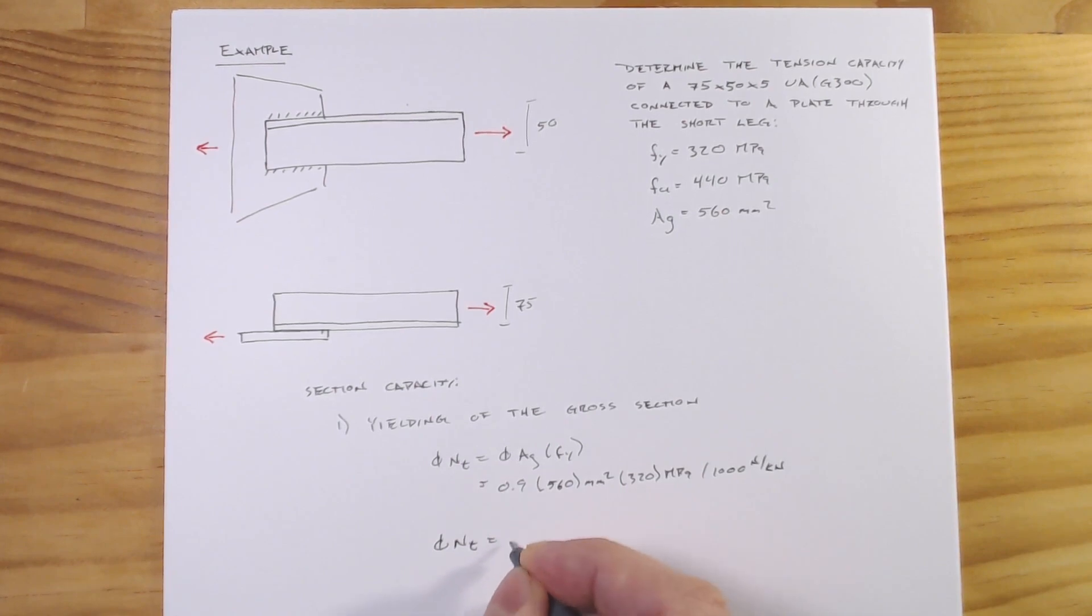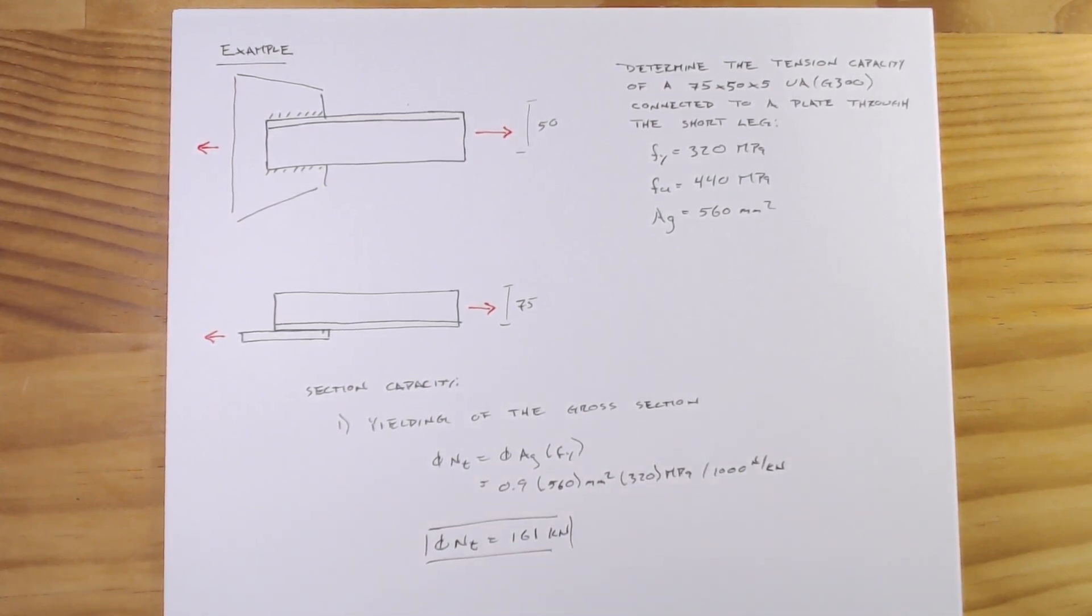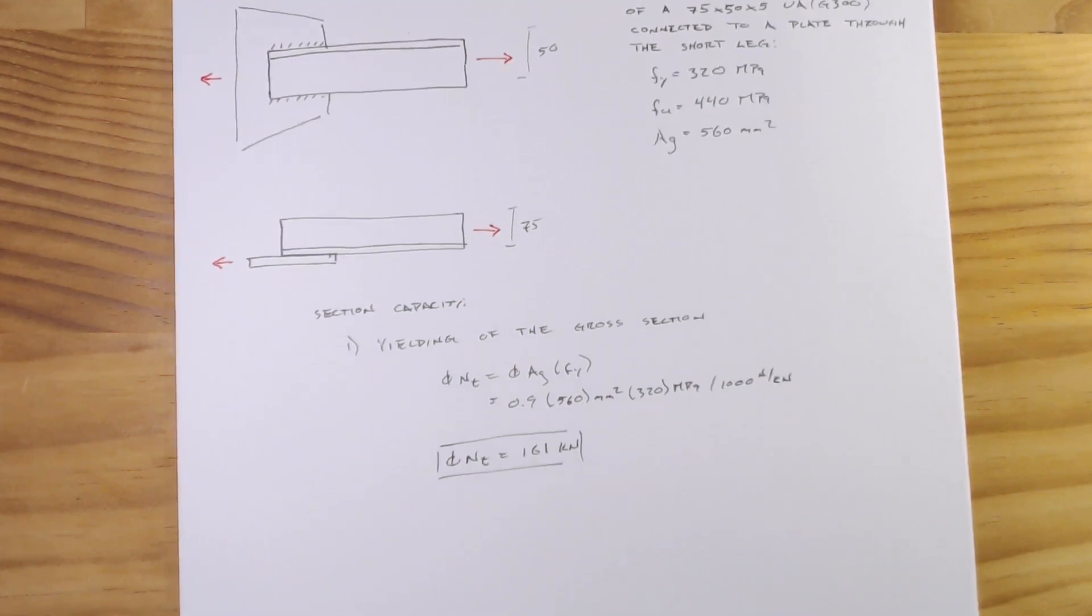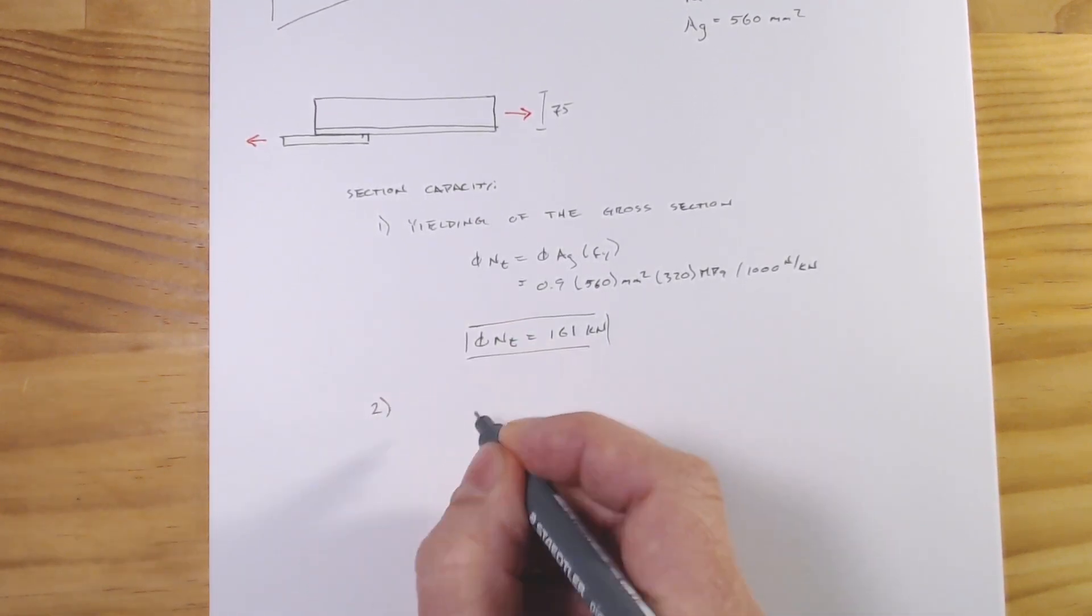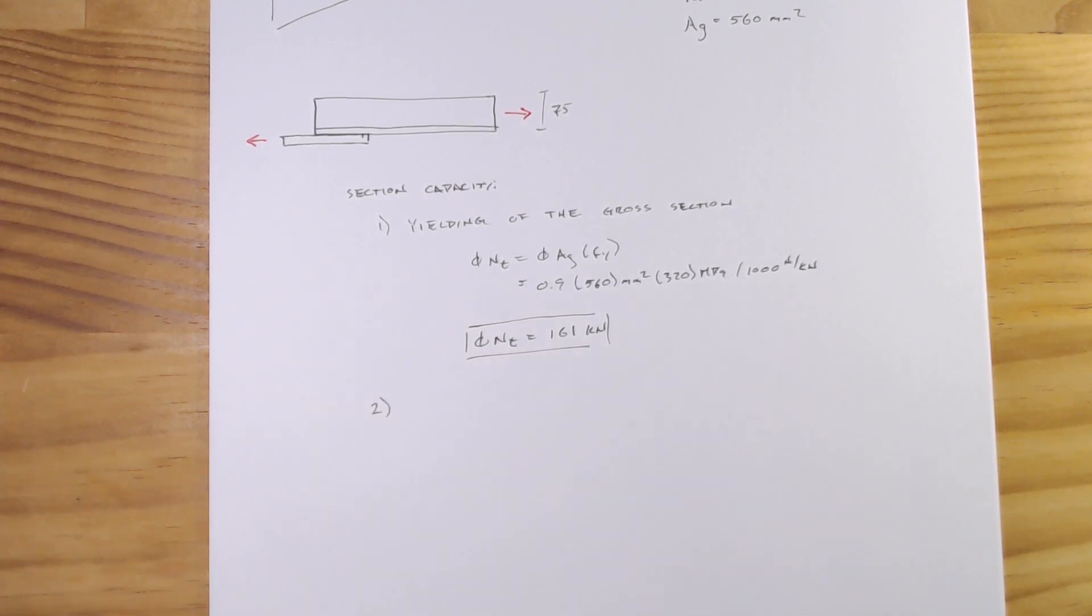We'll divide by a thousand newtons per kilonewton and so we end up with φNst equals 161 kilonewtons. That should look very familiar to the examples which we've done looking just at flat plates because it's ultimately the same. We just get a gross area, multiply it by its yield stress, and that's the capacity. We have an area times a stress we get a force, that's our tension capacity.